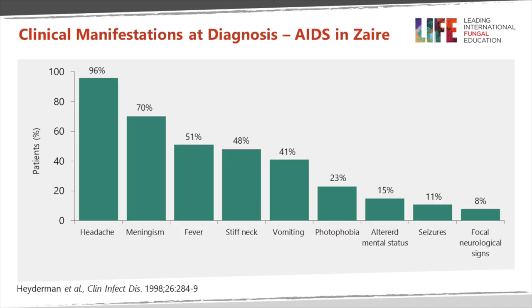Looking at patients presenting with AIDS in sub-Saharan Africa, headache is very common. Meningism is less common but present if you look for it — that's a stiff neck. Only half the patients had fever, half complained of a stiff neck. Vomiting is fairly common, and less common is photophobia. Altered mental status and seizures are uncommon but serious when they occur. Focal deficits are also fairly uncommon.